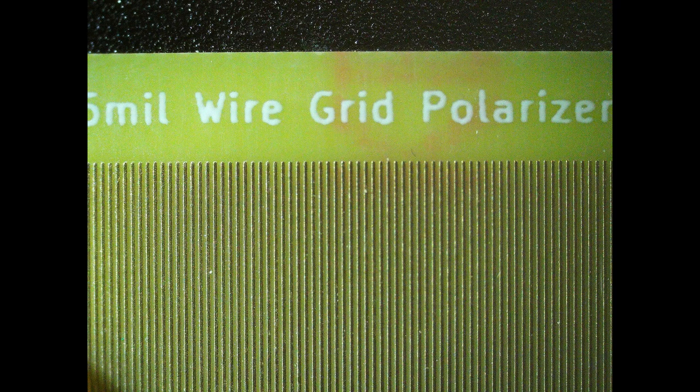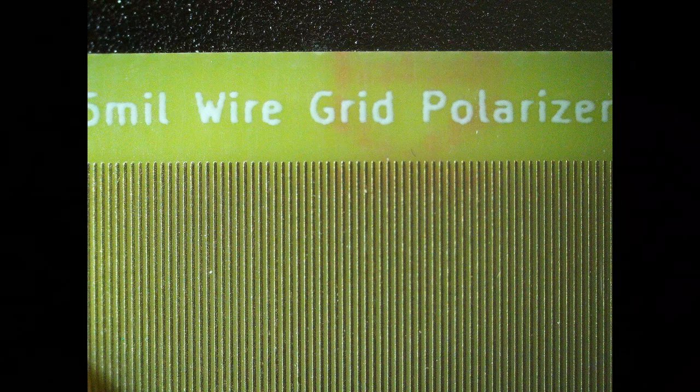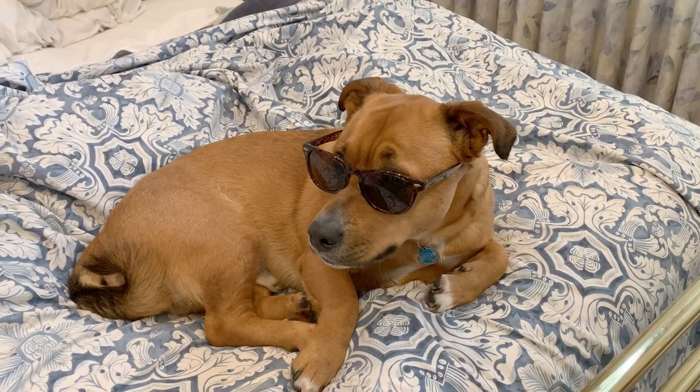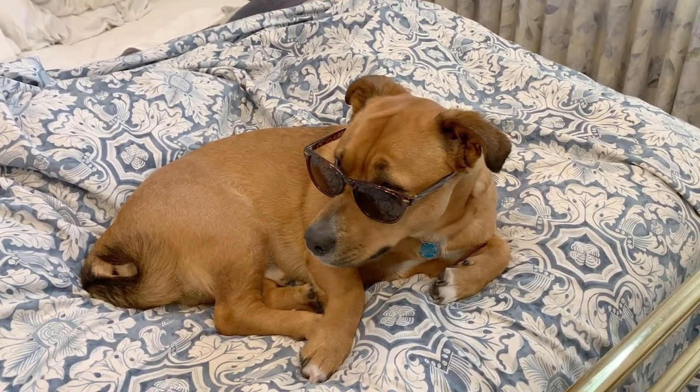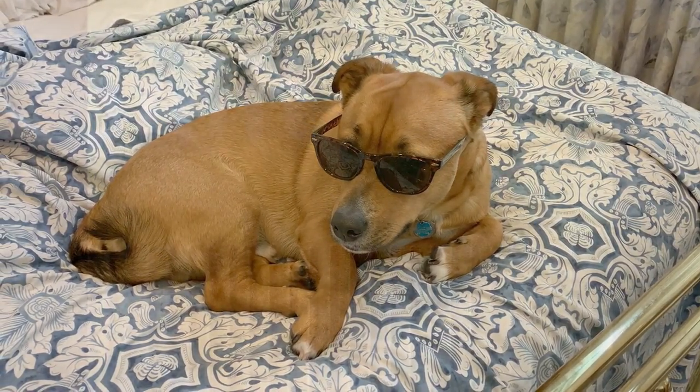Polarizers in sunglasses are wire grid polarizers of a type. How is that possible? You know, under a microscope, you don't see any little wires and stuff.